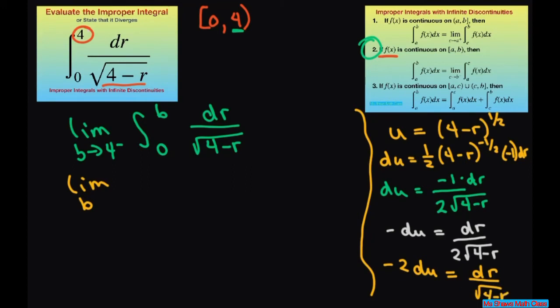Not the 2, I'm just moving this 2 up here. So we have the limit as b approaches 4 from the left.